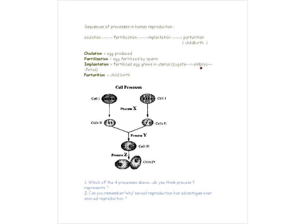First of all we're going to go over these different processes involved in human reproduction. We start with ovulation, go to fertilization, then implantation, and parturition — that's just a fancy name for childbirth. Ovulation is when the egg is produced, fertilization is when the egg is fertilized by the sperm, and implantation is when the fertilized egg grows in the uterus. When the zygote is formed — that's when the egg and sperm meet — it is implanted in the uterus, and after that it grows into the embryo and eventually the fetus. The last stage, parturition, is childbirth.